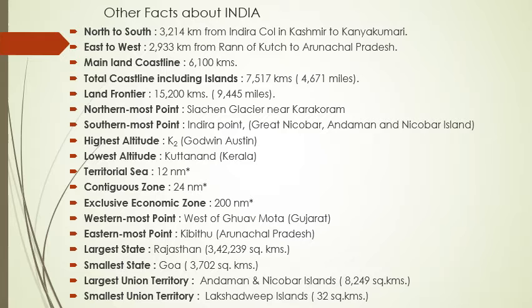The contiguous zone of India is 24 nautical miles. The economic zone of India's length from the coastal boundary is 200 nautical miles. The westernmost point of India is west of Ghormata in Gujarat. The easternmost point of India is in Arunachal Pradesh, i.e. Kibitu.